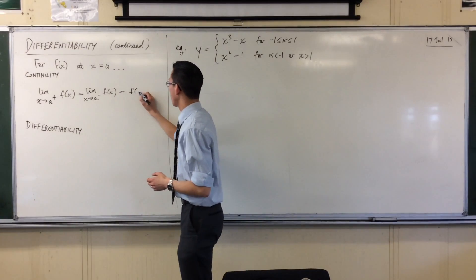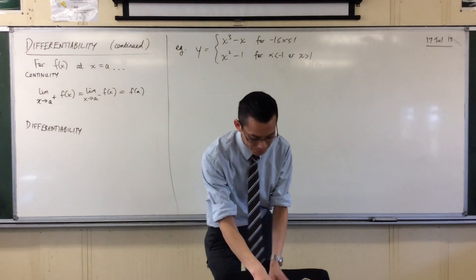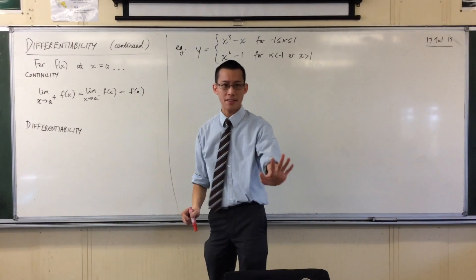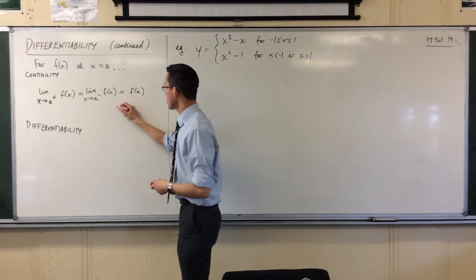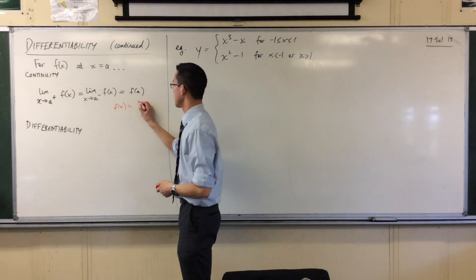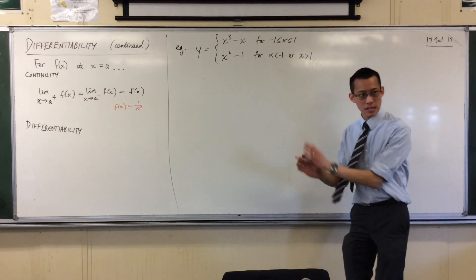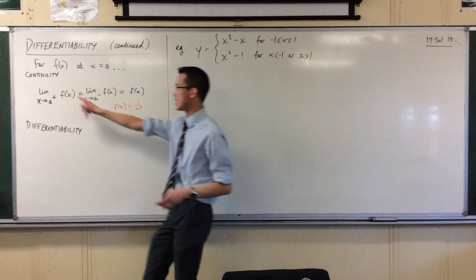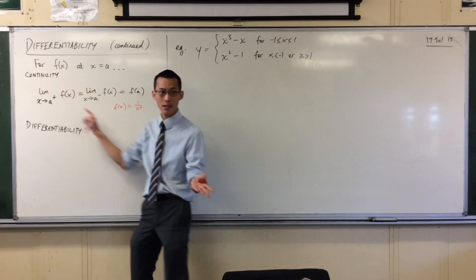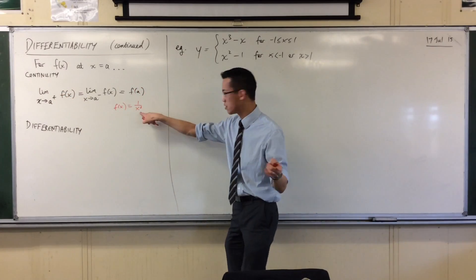Because just really quickly, if you remember, don't write this, just remember it. If you think of a simple function like this guy, 1 on x squared, you don't need to put any pen to paper to know that there's going to be a discontinuity at zero, at x equals zero, because it's on the denominator.